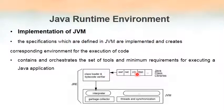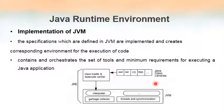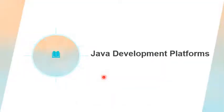Class libraries are similar to library or header files in C programming — like the hash-include .h files we write in C. In Java, there are many such built-in files known as Java class libraries, which are already available and help us write programs. The Java Virtual Machine consists of an interpreter, a garbage collector, and a threads and synchronization part. JVM plus class loader, bytecode, and class libraries together form the Java Runtime Environment.